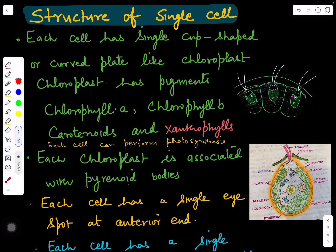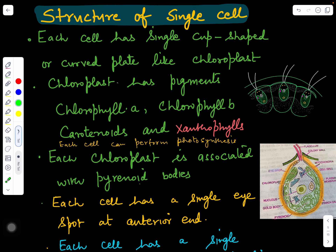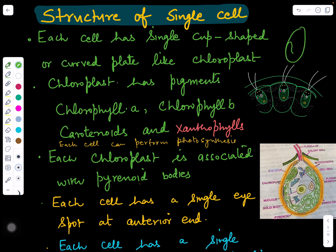Now looking at the structure of each individual cell — the cells are connected with each other and each cell has a cup-like chloroplast with a pyrenoid body associated with it. The chloroplast contains pigments: chlorophyll a, chlorophyll b, carotenoids, and xanthophyll. Because of these pigments — chlorophyll a, chlorophyll b, and carotenoids — this belongs to class Chlorophyceae, the green algae.